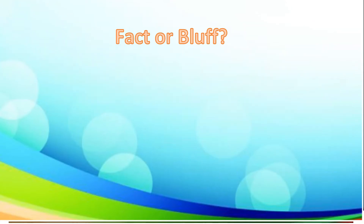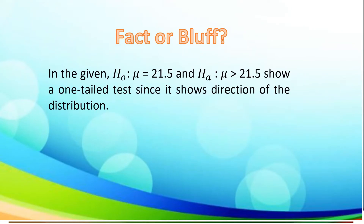Now let's have the next statement. On the given, the null hypothesis is equal to mu which is 21.5. The alternative hypothesis, which is mu, is greater than 21.5, showing a one-tailed test since it shows the direction of the distribution. That is a fact because the symbol shows a one-tailed test.